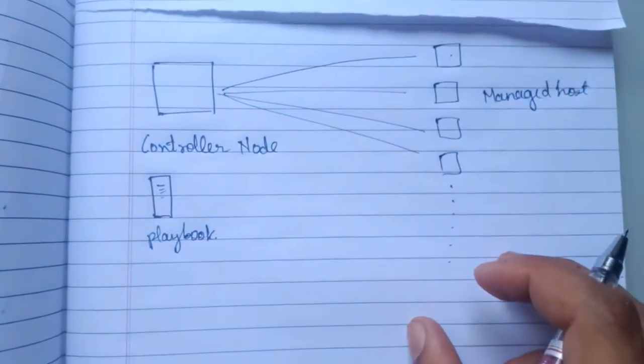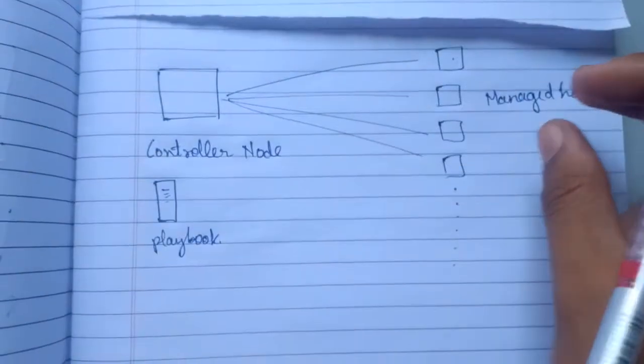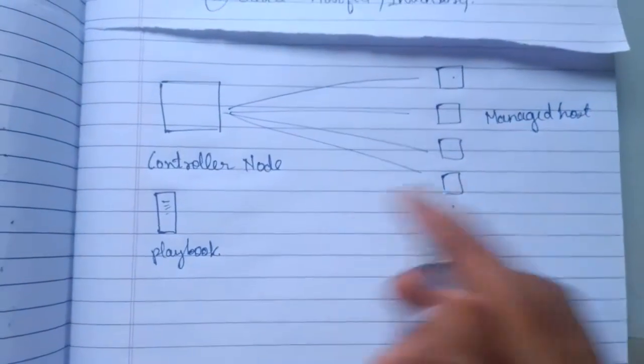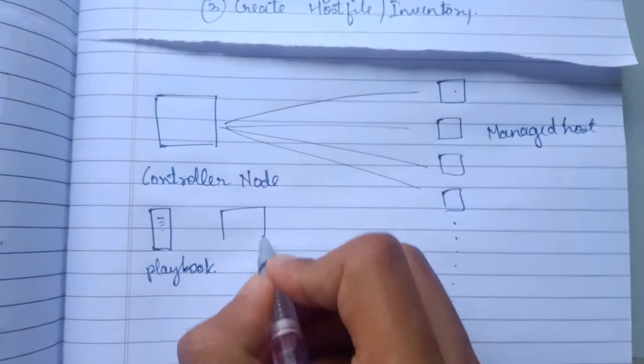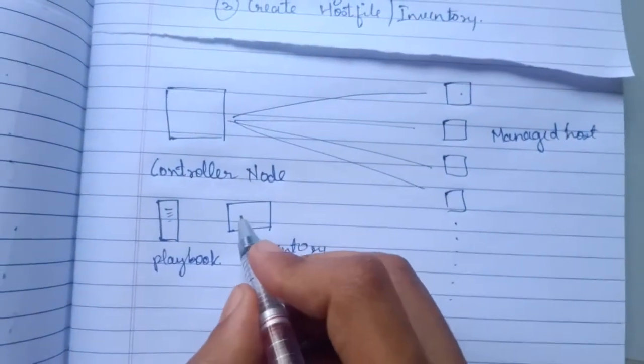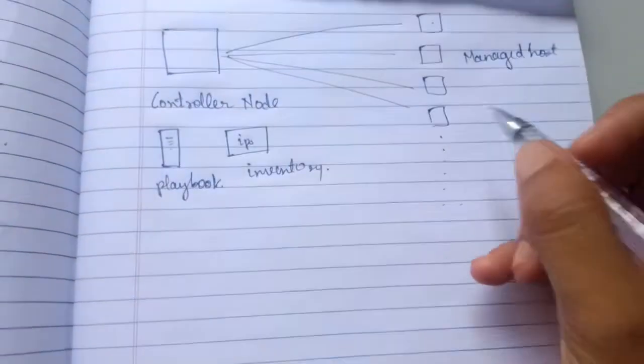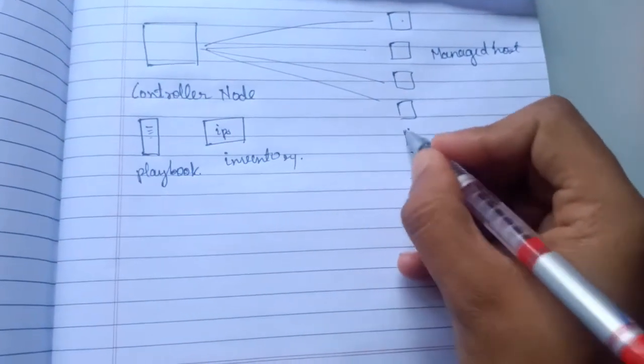And how will the controller node understand on which host they want to execute? So it will be configured using a file which is called as inventory or the host file. This inventory will consist of all the IPs of the managed host. So if you want to add more host you just need to edit the inventory files, you need to add it.